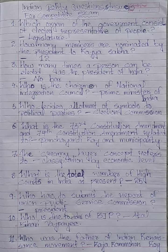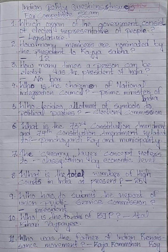Panchayati Raj and Municipality. The creamy layer concept refers to classification by economic level. What is the total number of High Courts in India at present? 25. Who has to submit the report of the Union Public Service Commission? The President. Who is the founder of BJP?